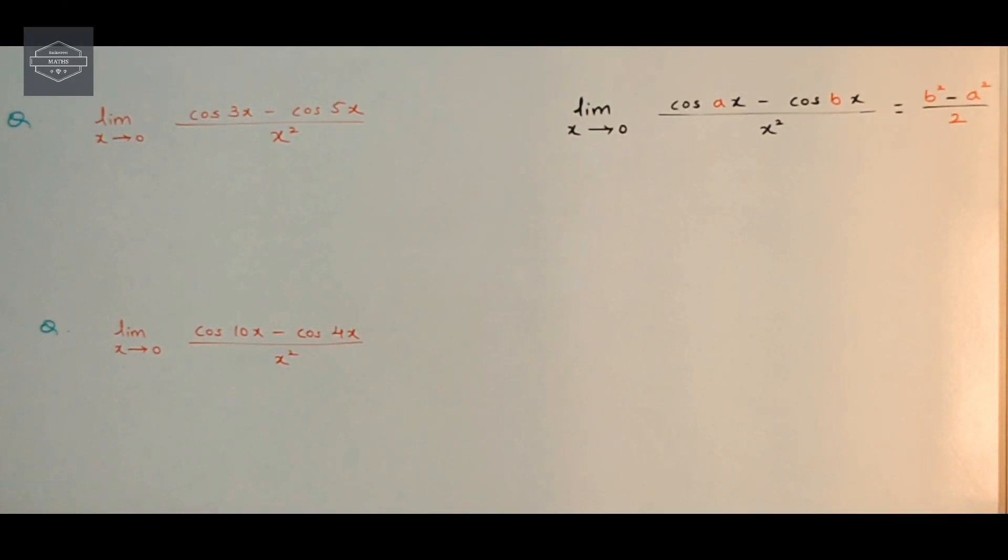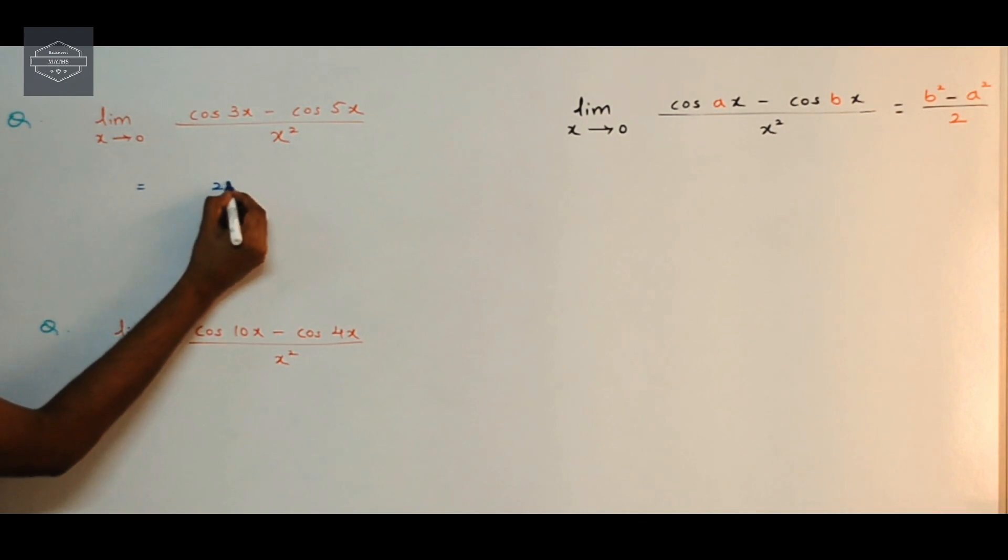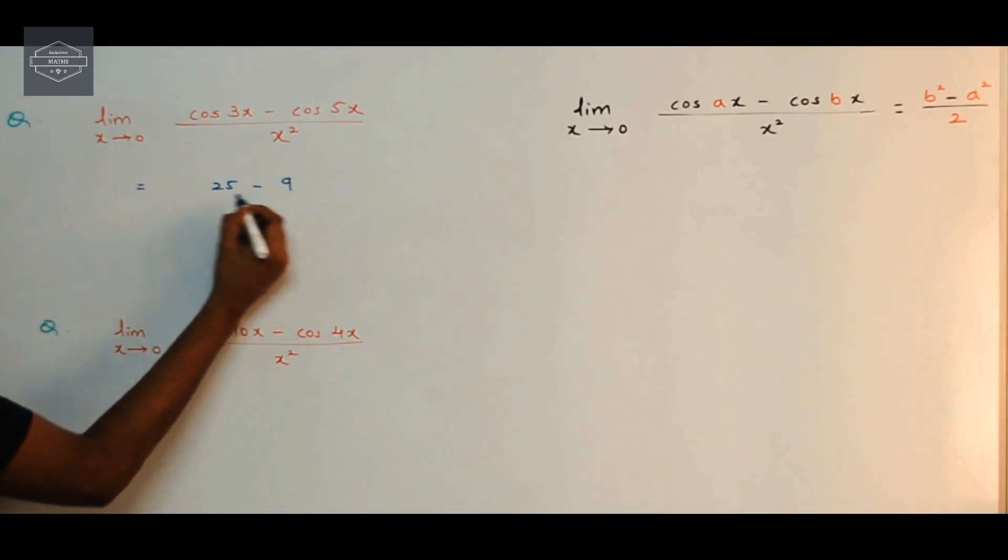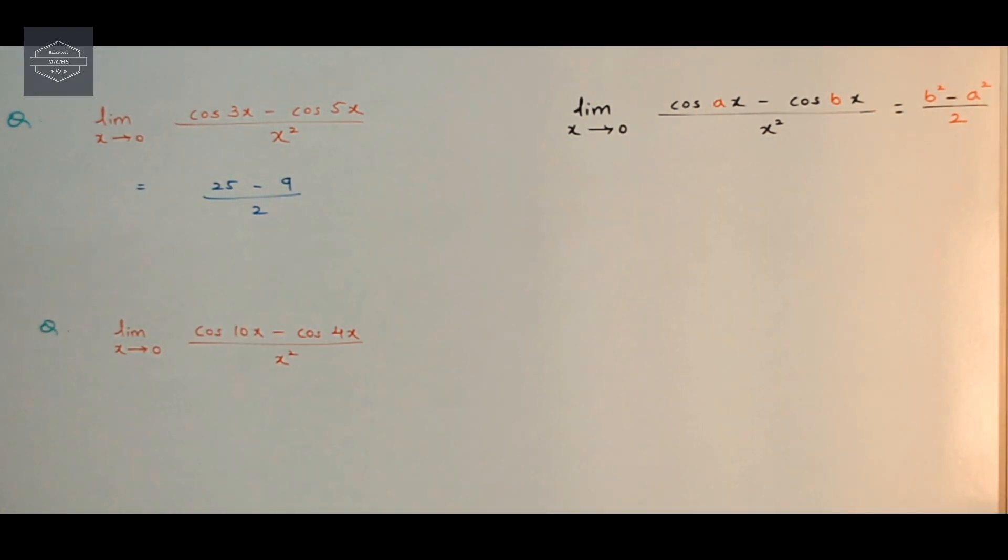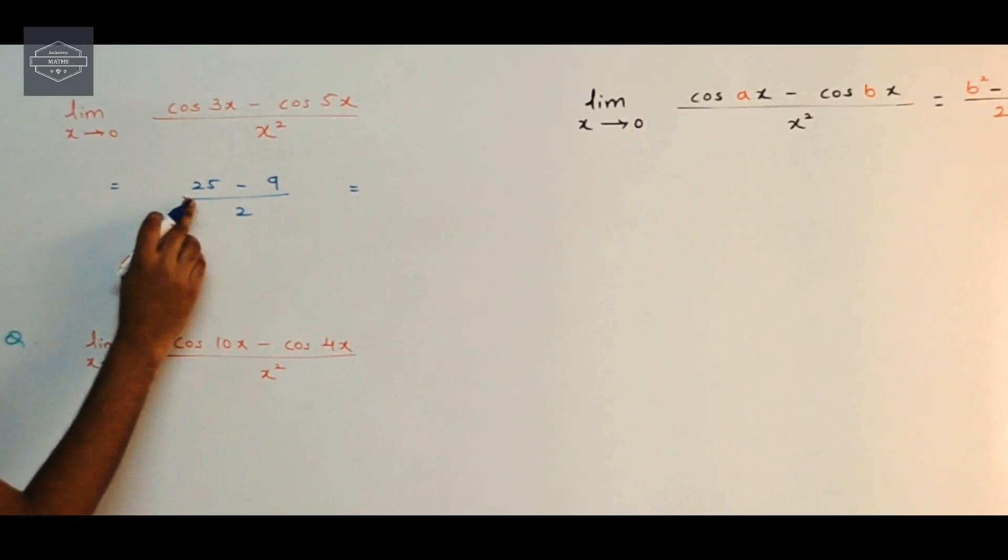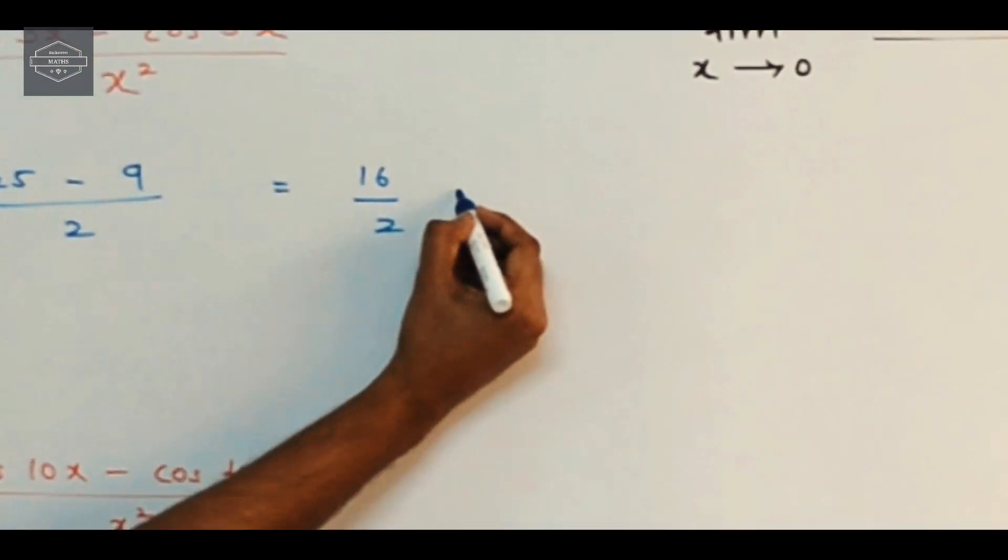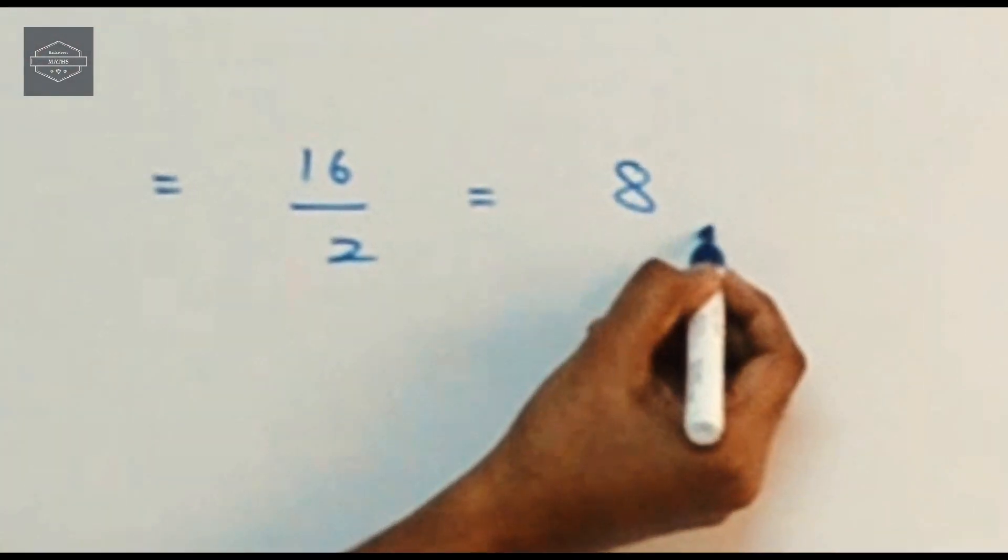Alright, so let's apply the shortcut onto the first sum here. So it will be cos 3x minus cos 5x upon x squared. Toh yahan pe, b ka value is 5 and 5 ka square is 25. Minus a squared, a ka value is 3 and 3 ka square is 9 upon 2. So this will be equal to 25 minus 9 is 16 upon 2 and the answer is 8.